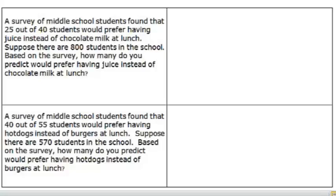This example says, a survey of middle school students found that 25 out of 40 students would prefer having juice instead of chocolate milk at lunch. Suppose there are 800 students in the school. Based on the survey, how many do you predict prefer having juice instead of chocolate milk?